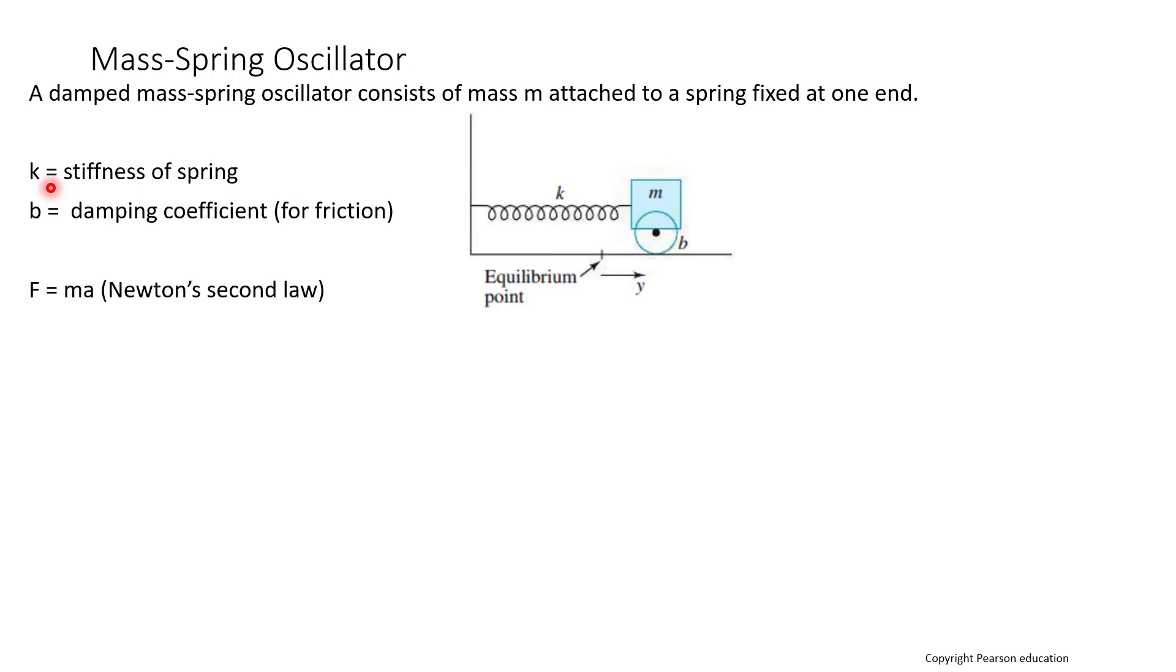In our case, k is going to represent the stiffness of the spring, and then b is going to represent the damping coefficient for friction. If you look at our diagram, we have an equilibrium point, and then y is going to be the displacement from the equilibrium point.